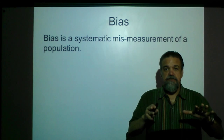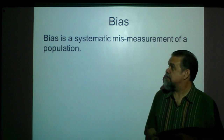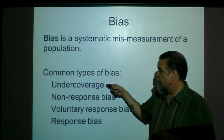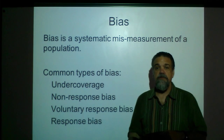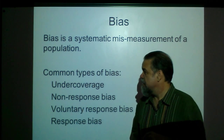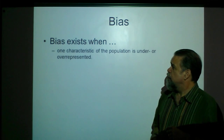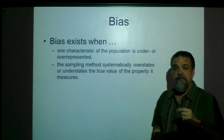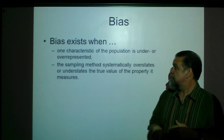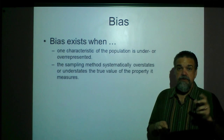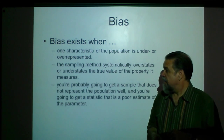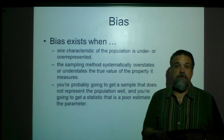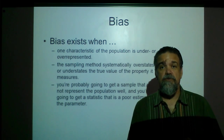To summarize: bias is a systematic mis-measurement of some kind of population. The common types of bias we saw were under coverage, non-response bias, voluntary response bias, and response bias — four very common kinds, though not the only ones. Bias always exists when one characteristic of the population is either overrepresented or underrepresented. It's when the sampling method systematically overstates or understates the true value of the property it's trying to measure — you get a statistic that doesn't represent the parameter, and a sample that doesn't represent the population.